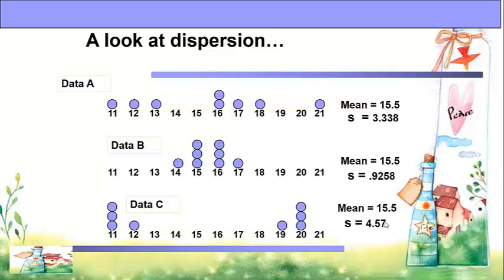This means the variability of the sets of data is not the same. In data A, the standard deviation is 3.33. In data B, it is 0.9258. And in data C, it is 4.57. Interpreting this data, data C is more dispersed than A and B, A is more dispersed than B, and B has the smallest standard deviation.